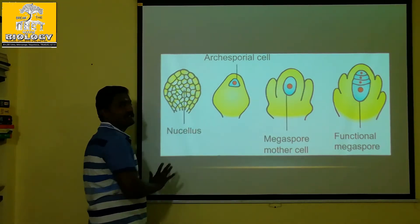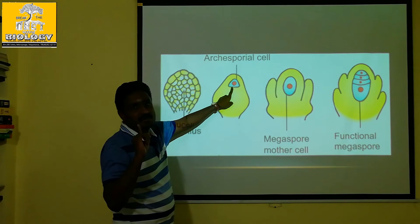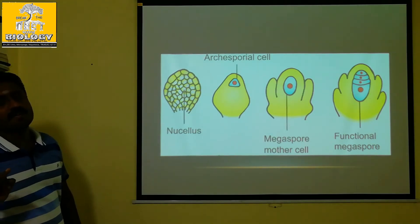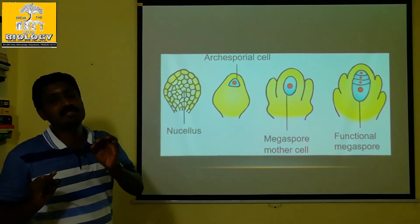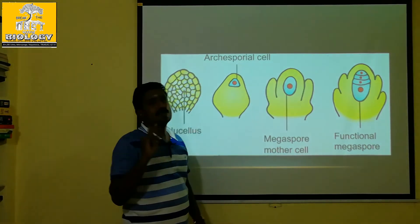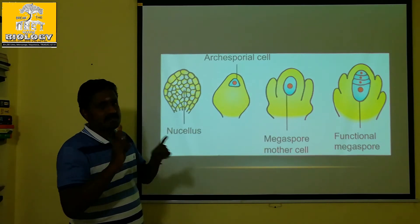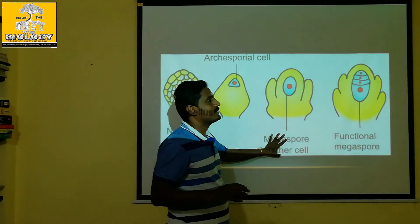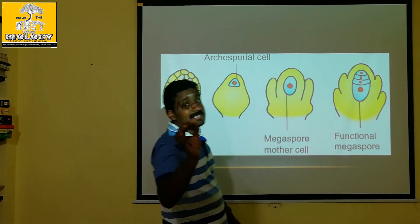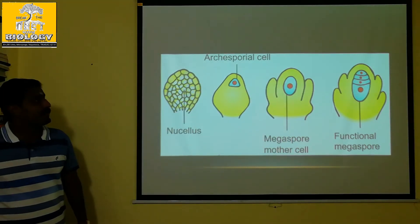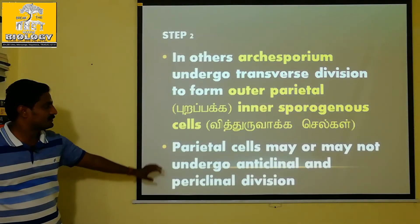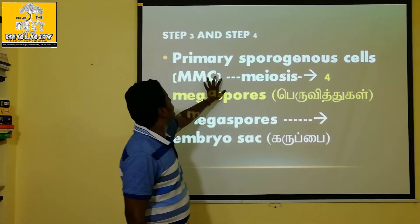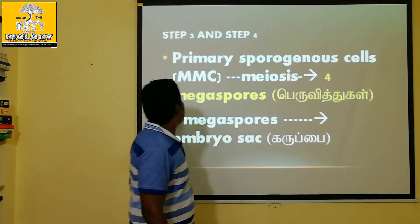In the nucellus hypodermal region, one archesporial cell undergoes transverse division producing parietal cells and sporogenous cells. The sporogenous cells become the Megaspore mother cell (MMC). The MMC undergoes meiosis to produce 4 haploid Megaspores.